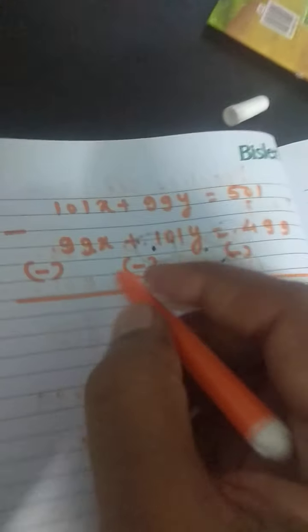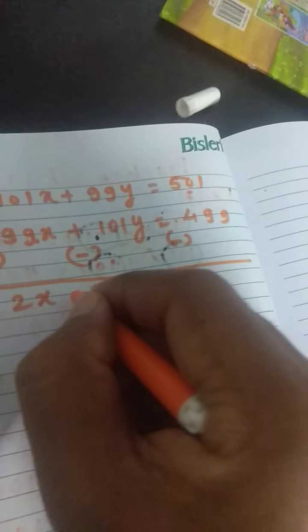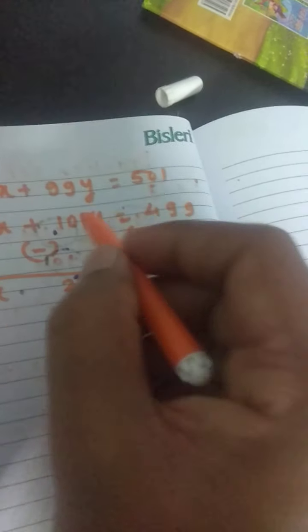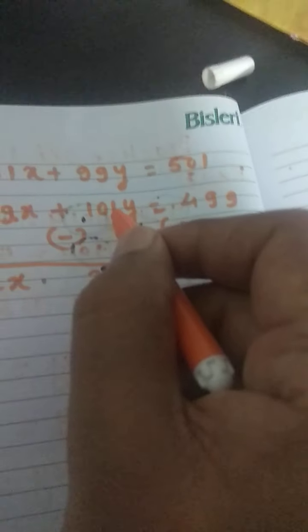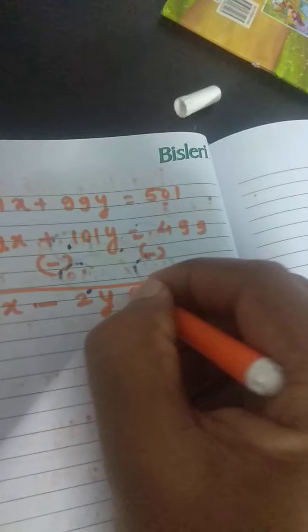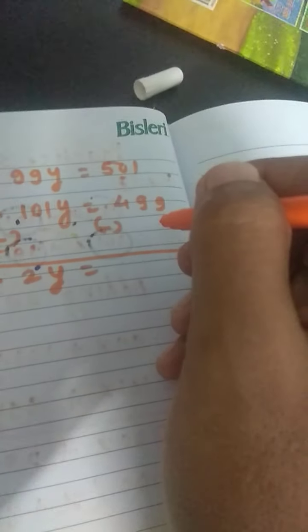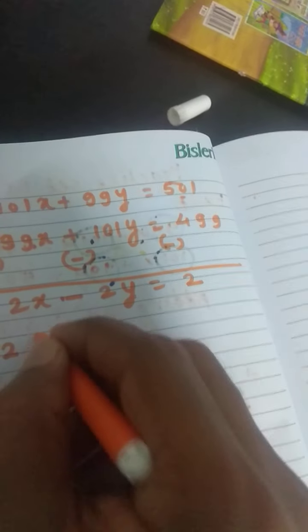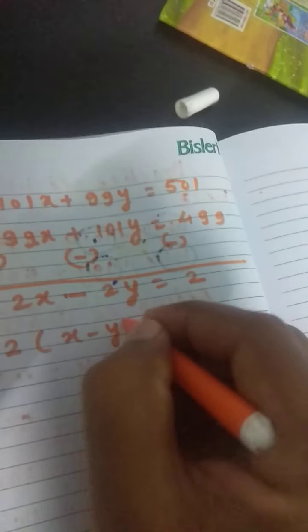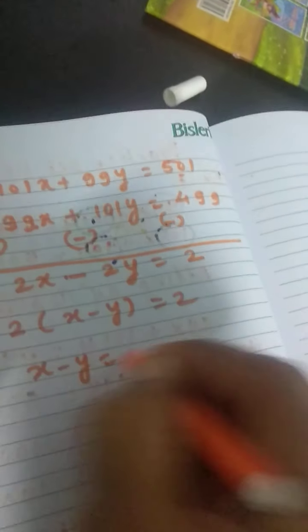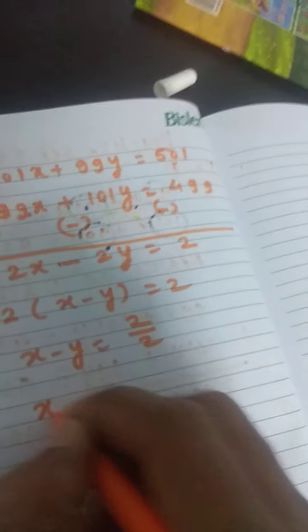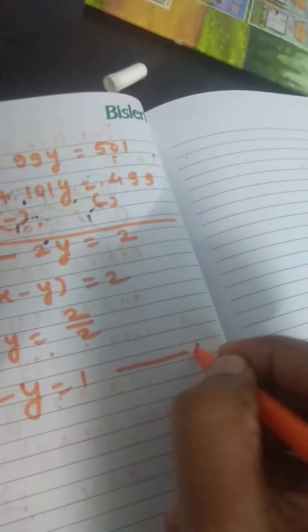101 minus 99 is 2x, and 99 minus 101 is minus 2y, which equals 501 minus 499, which is 2. So 2x minus 2y equals 2. Taking 2 as common, x minus y equals 1. This is Equation 4.